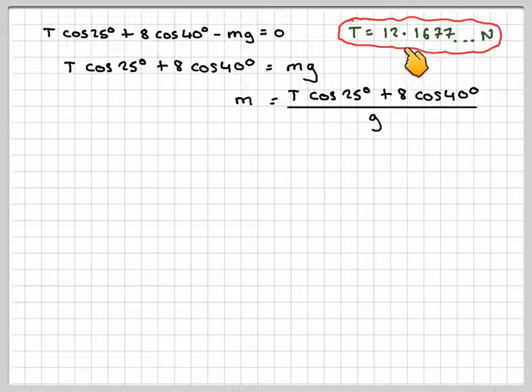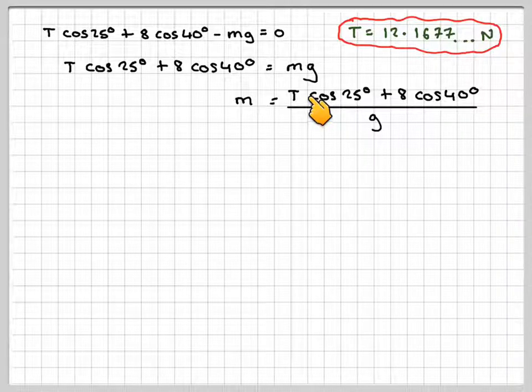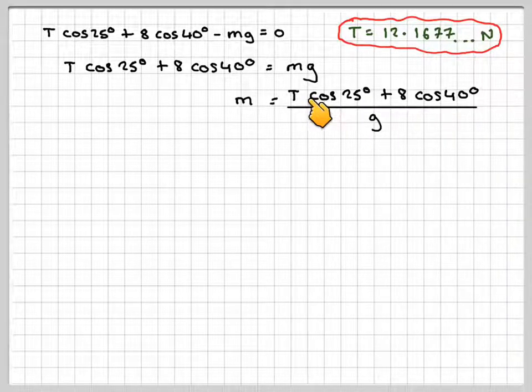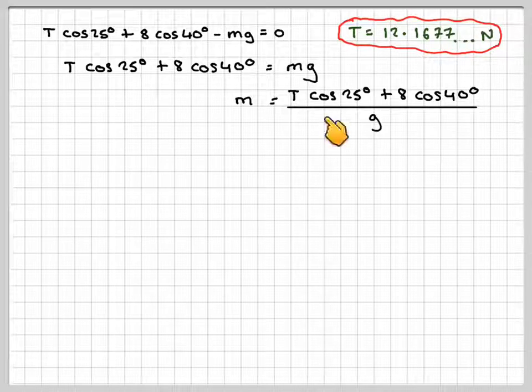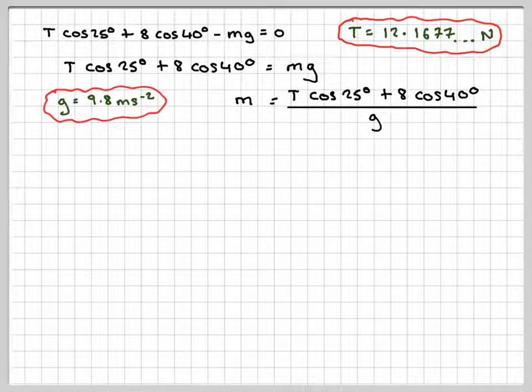Instead of T, if we press the answer in our calculator, the answer function, normally shift, it's on answer, and mine is above the minus sign, it's a Casio. So then we're going to put that number in there. T cos 25 plus 8 cos 40, all divided by g, g being 9.8 meters per second squared.